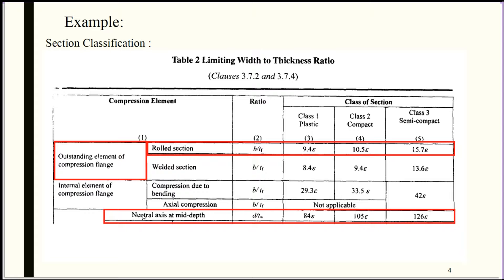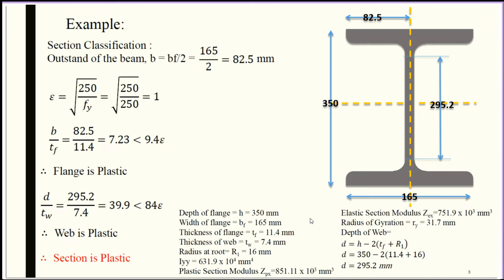After checking in IS 800-2007, BF/TF ratio less than 9.4 epsilon means the section is plastic. D/TW ratio less than 84 epsilon also confirms the section is plastic. As the section is plastic, the value of beta B is 1.